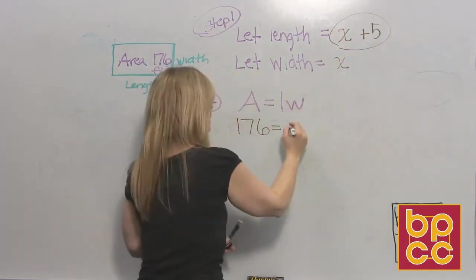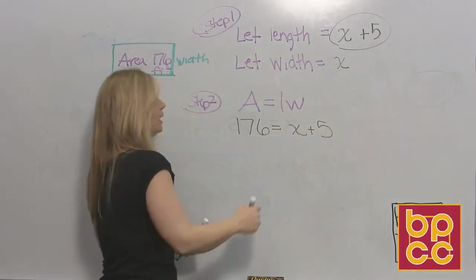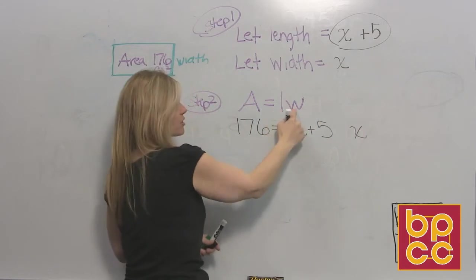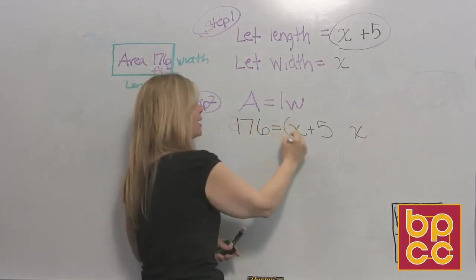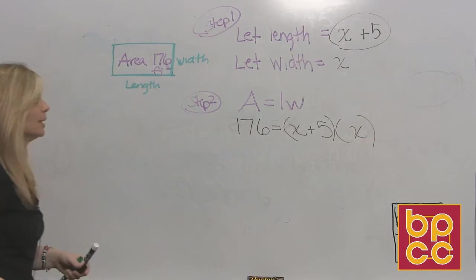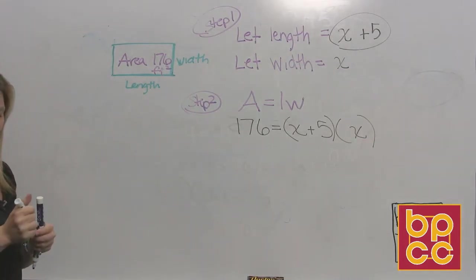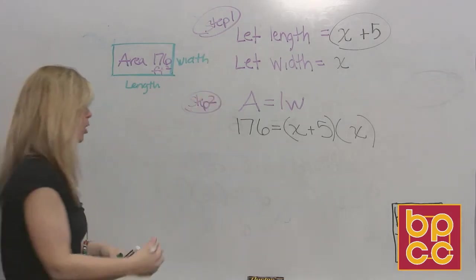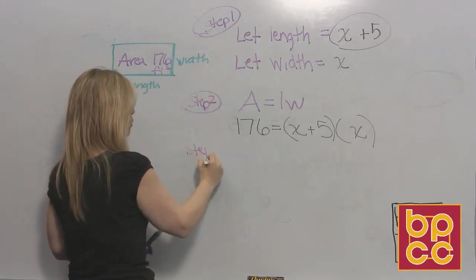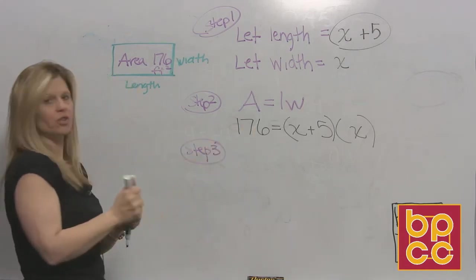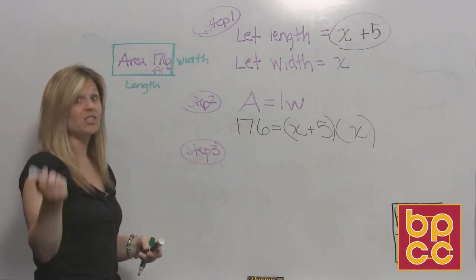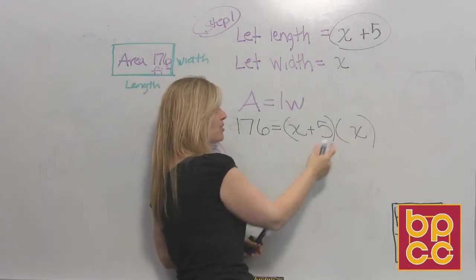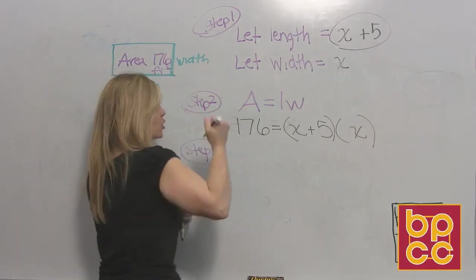L stands for length. This is your length. It's x plus five. I need my width. This is my width. It's x. These are side by side, so they're connected by multiplication. Now you've wrote an equation. Your job now is easy. Once you get step one and step two done, now you can rock and roll. Here's where we're going to take what we've learned. Step three is to work this equation. Well we discussed it the other module. You can't move the 176 because we've got stuff stuck in parentheses. So your job is to get rid of the parentheses. So we're going to multiply.